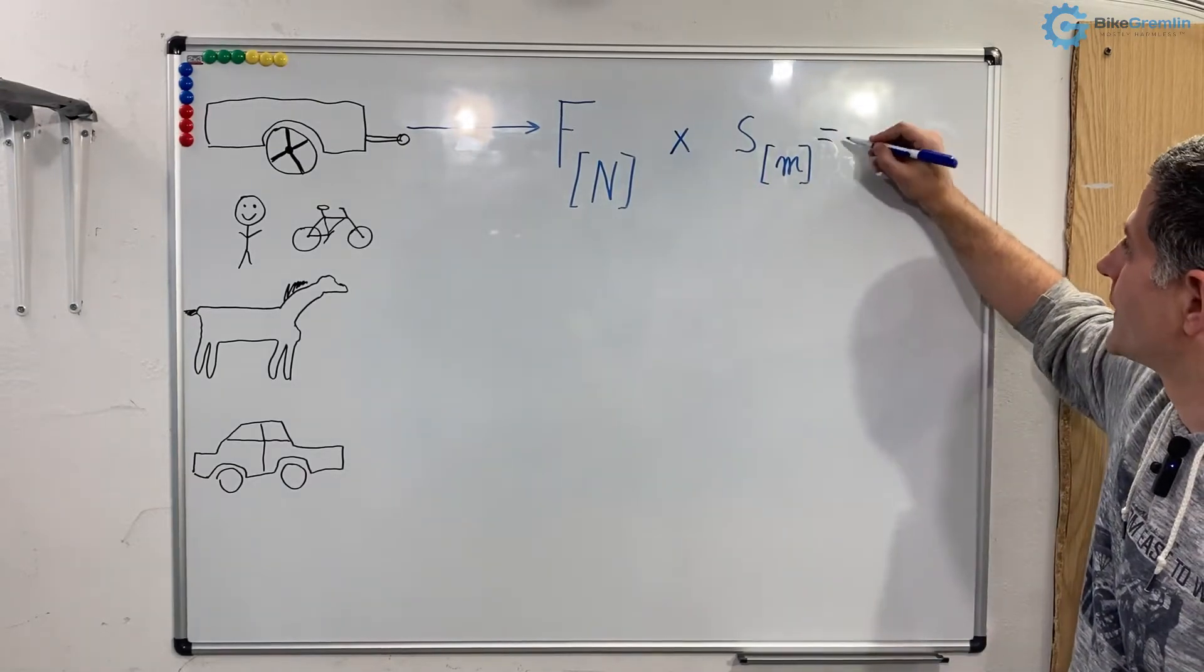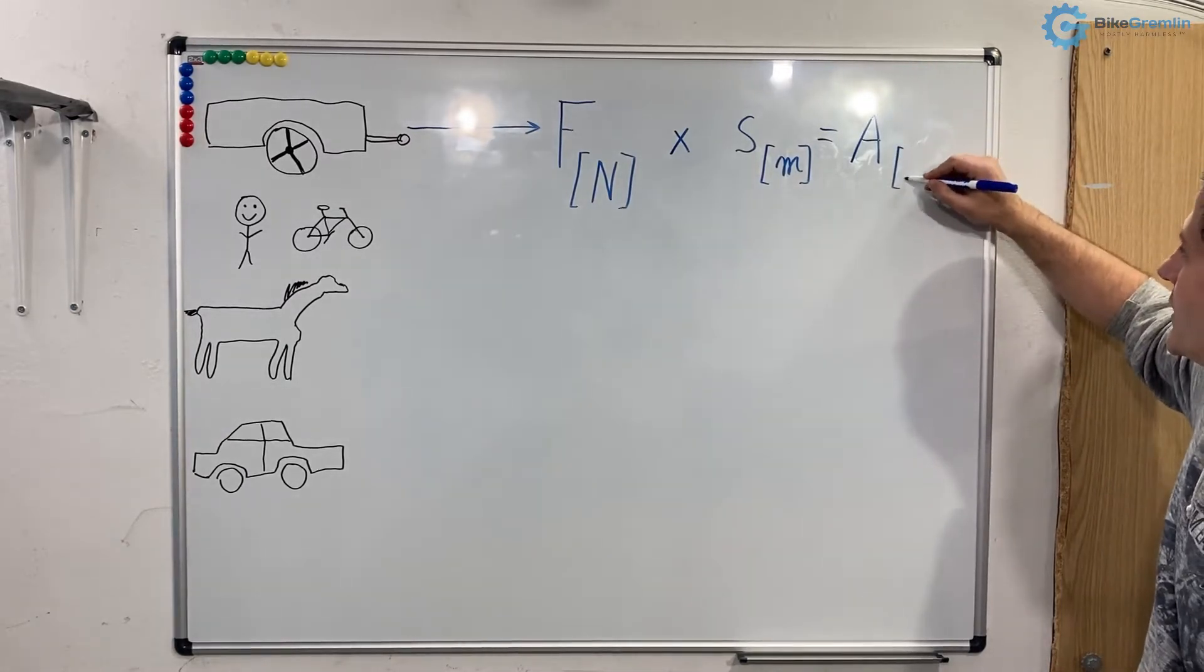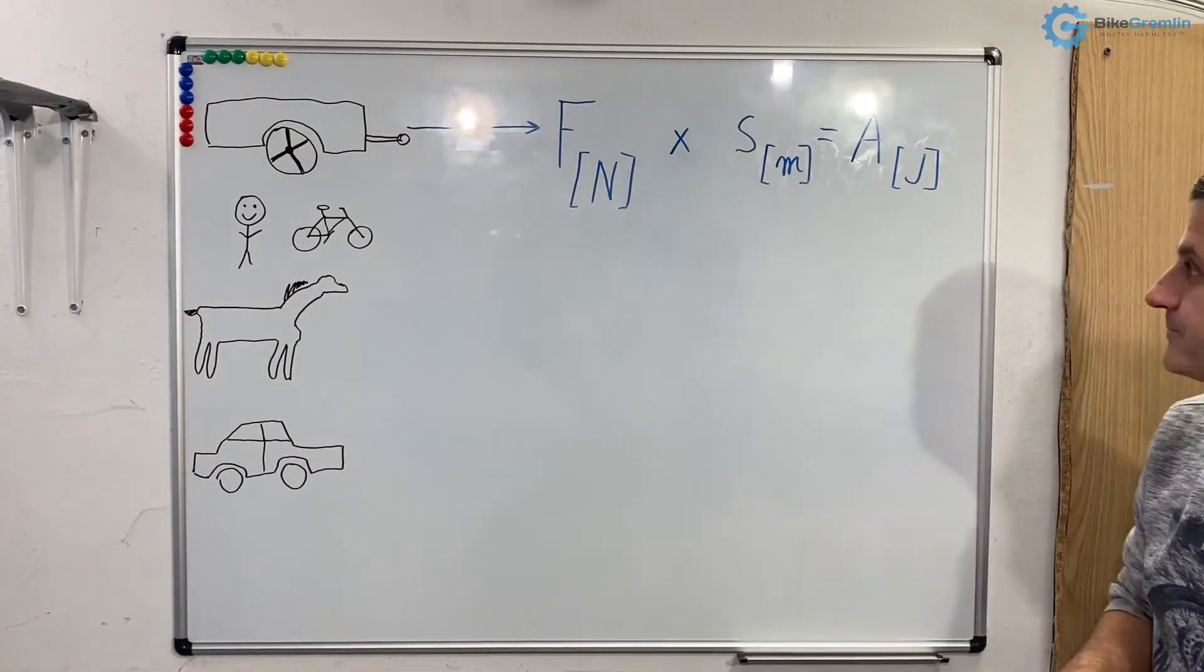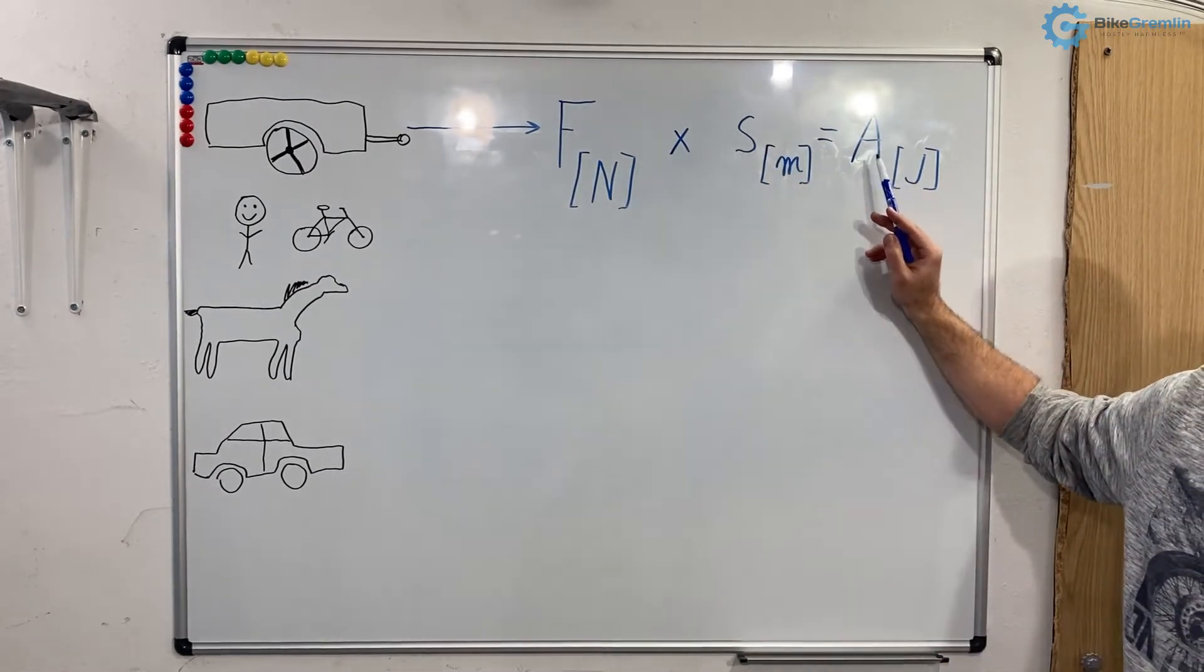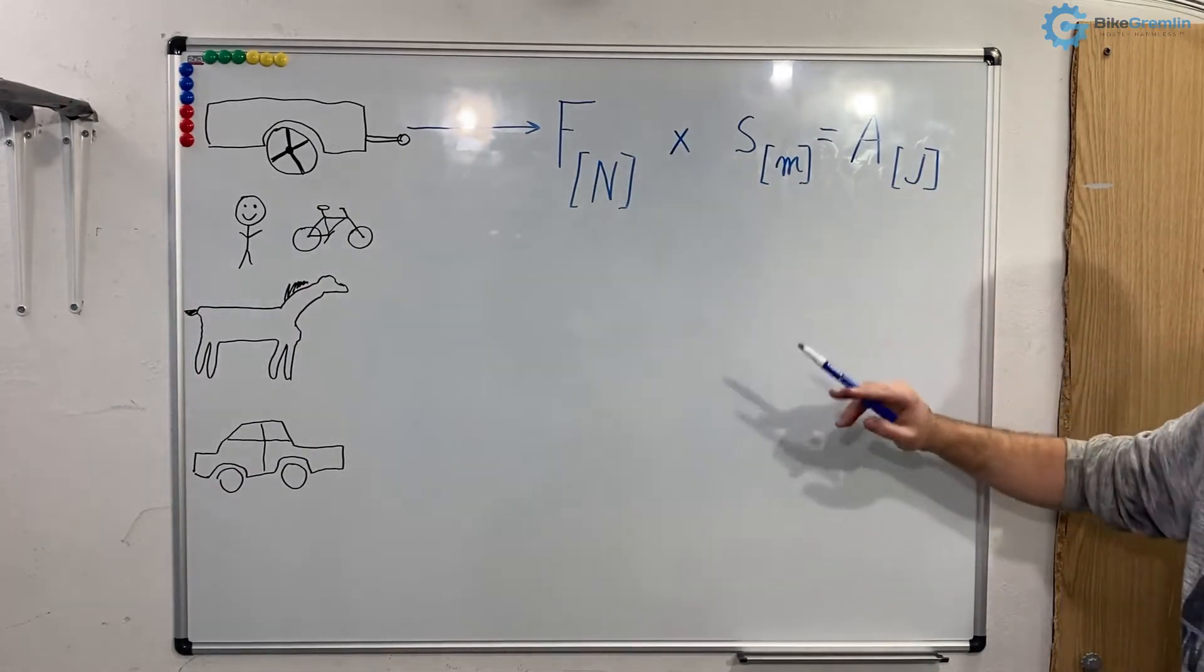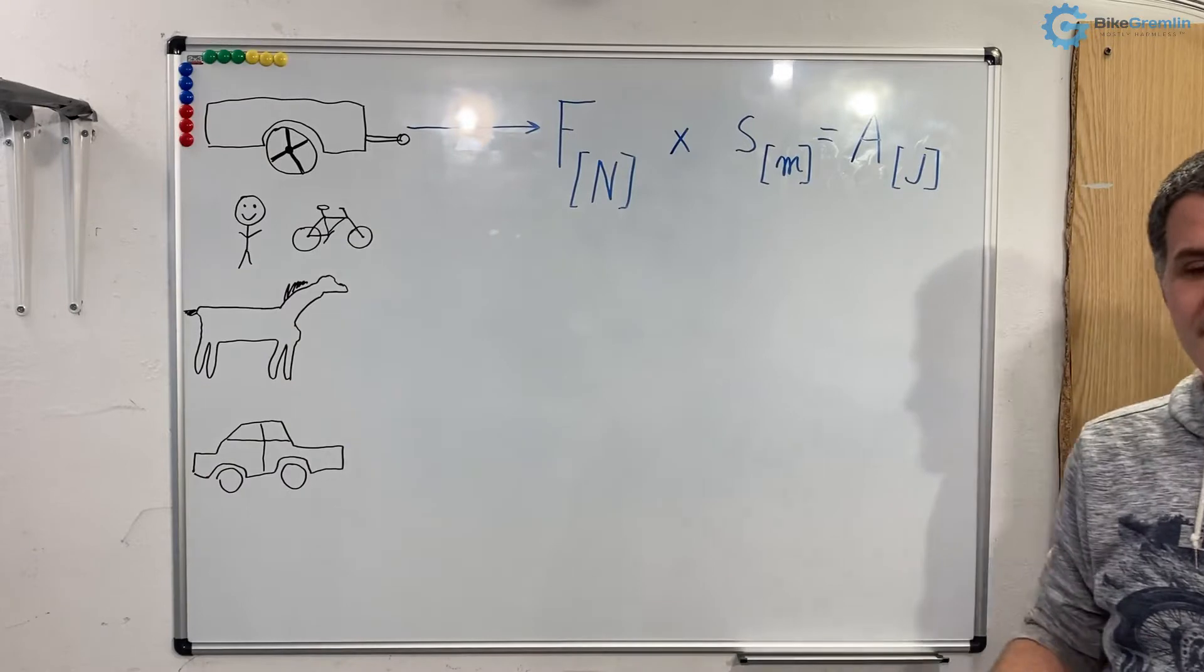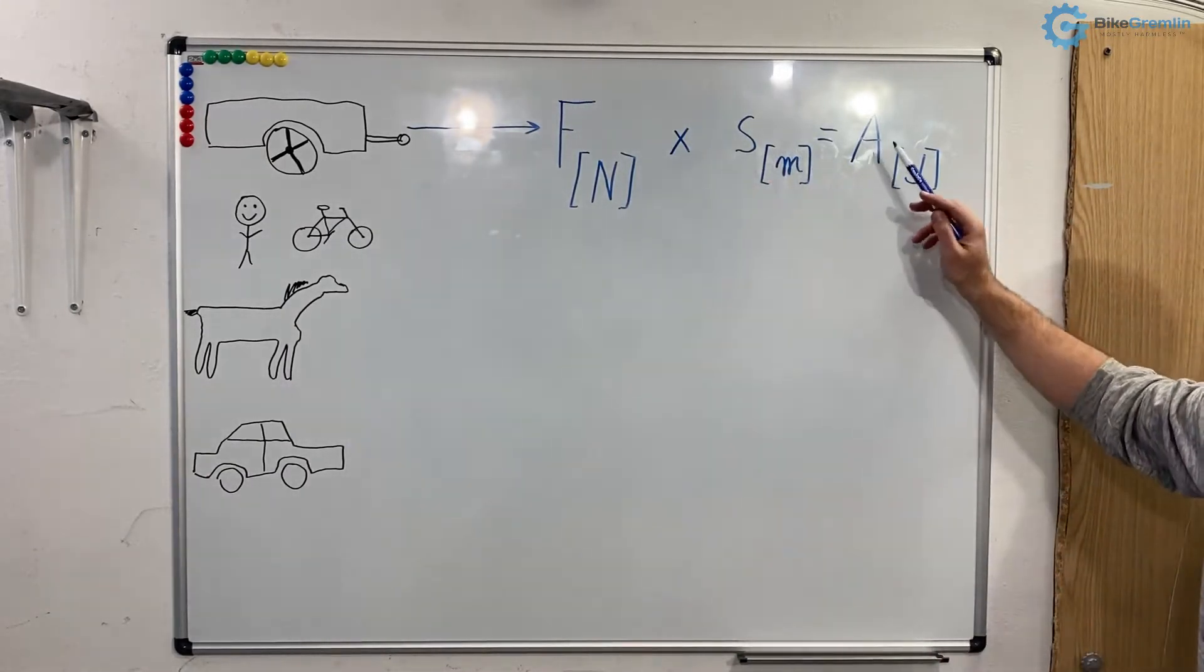That will result in the amount of work. I'll assign letter A for the amount of work and it is measured and expressed in joules with letter J. So the further we go the more work is done, or the more force used also the more work is done if the distance stays the same.